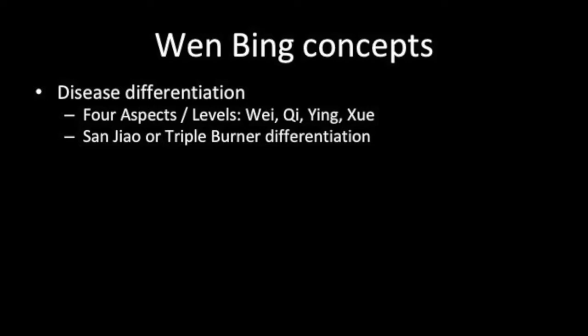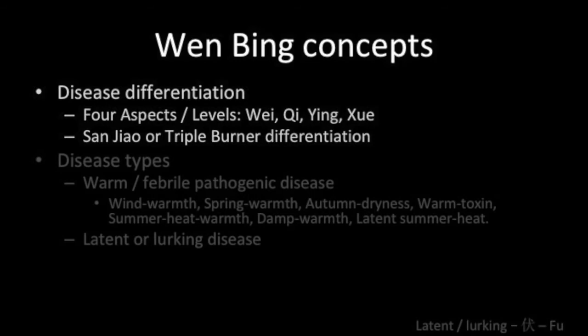Wenbing introduces two new forms of disease differentiation: the four aspects or levels — that is, Wei, Qi, Ying, and Xue — and differentiation according to the Sanjiao or triple burner.